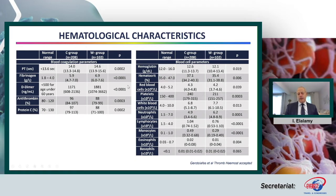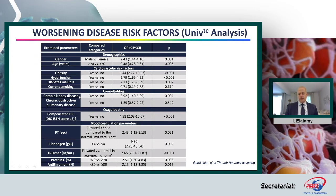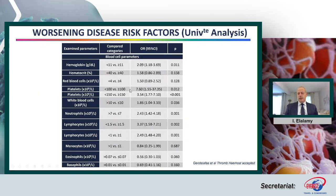Regarding the logistic regression univariate analysis, we observed that the most important risk factors related to the worsening group were male gender, cardiovascular risk factors including obesity, hypertension, and diabetes. Regarding comorbidities, renal impairment was significant, and regarding coagulopathy, the DIC score over five was associated with important odds ratios. Regarding the hematological profile, anemia, reduction of platelets, reduction of lymphocytes, and reduction of eosinophils were all identified.